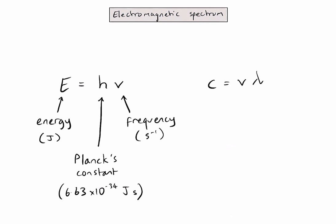In the right hand equation, c is the speed of light, which is given in the data booklet. V, as in the first equation, is frequency. And the last symbol, lambda, is wavelength in units of meters.